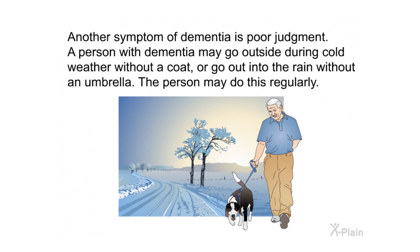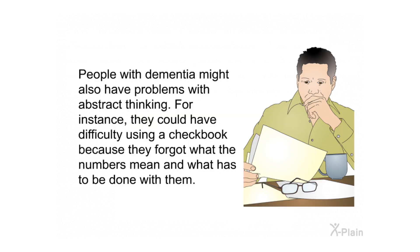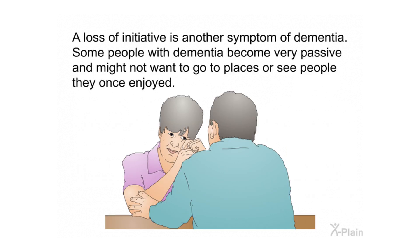Another symptom of dementia is poor judgment. A person may go outside during cold weather without a coat or go out into the rain without an umbrella, and may do this regularly. People with dementia might also have problems with abstract thinking — for instance, having difficulty using a checkbook because they forgot what the numbers mean. A loss of initiative is another symptom; some people become very passive and might not want to go to places or see people they once enjoyed.